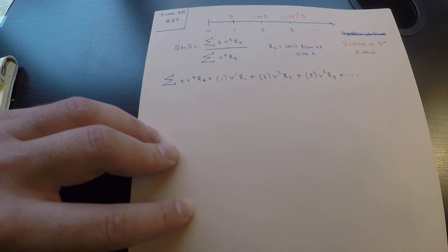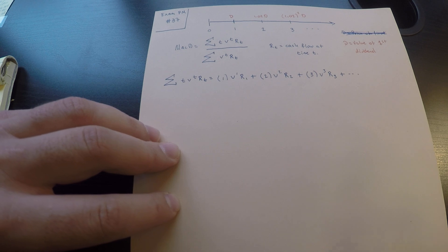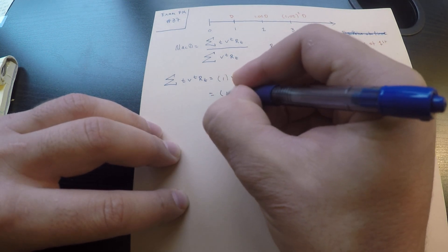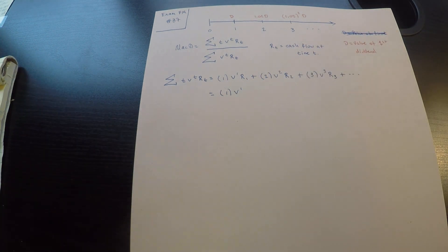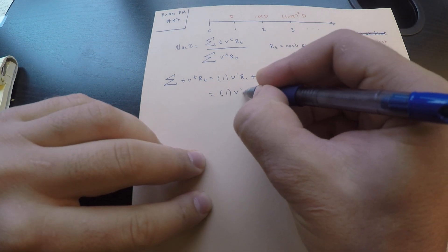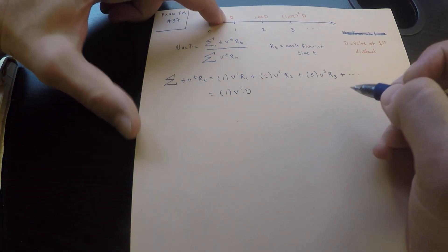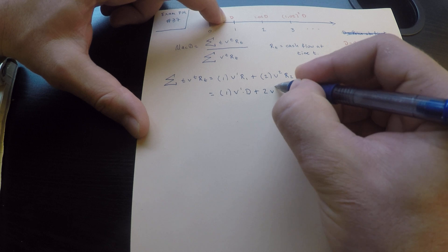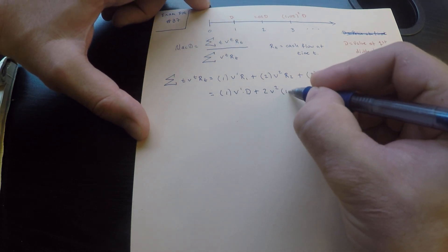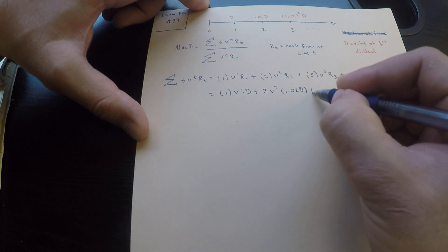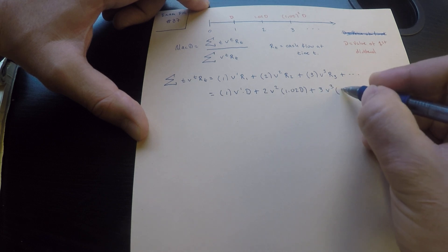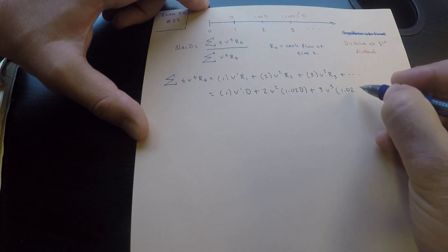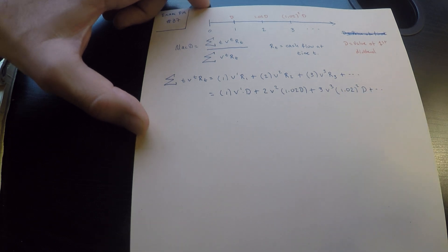Substituting the cash flows: R_1 is D, R_2 is 1.02 times D, R_3 is 1.02² times D, and so on. So the numerator becomes: 1·V·D + 2·V²·1.02D + 3·V³·1.02²·D + and so on.